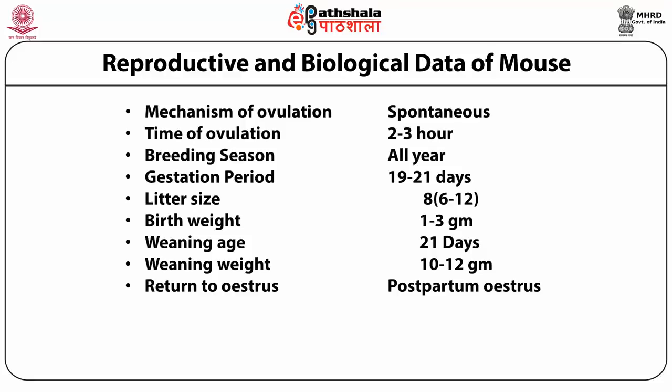Reproductive data: ovulation is spontaneous, occurring over 2 to 3 hours. The breeding season is year-round. Gestation period is 21 days. Litter size is approximately 8 pups. Birth weight is 1 to 3 grams. Weaning age is 21 days, when pups are separated from the mother, with weaning weight of 10 to 12 grams. After delivery, the mouse returns to estrus very quickly compared to other mammals.